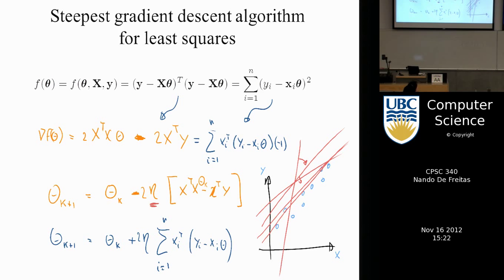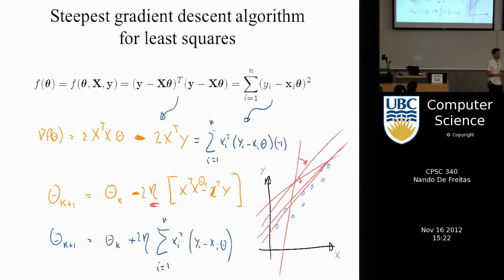There are guidelines on how to choose eta to ensure convergence. The gradient algorithm may not converge unless you have the right eta. Newton's method, on the other hand, will converge.